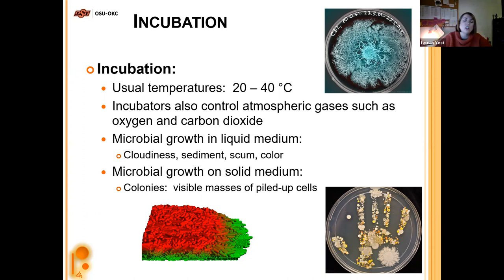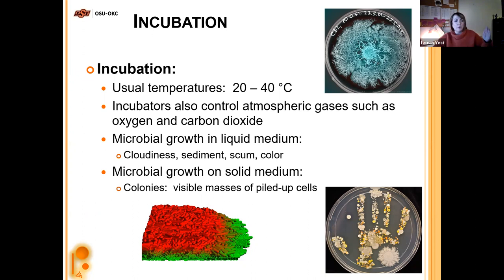In incubators we can also control how much oxygen, carbon dioxide, or other atmospheric gases are introduced to make the organism as happy as possible while growing. In liquid media, we look for turbidity, sediment at the bottom, scum at the top, or a color change — all indicating growth. On solid medium, visible masses of piled-up cells are called colonies. A single colony typically comes from a single bacterial cell.